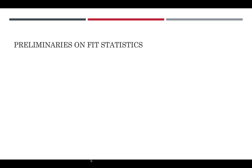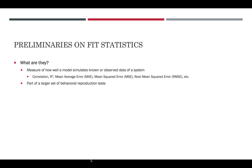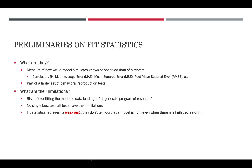In terms of preliminaries on fit statistics: what are they? There are lots of measures we might use — things like correlation, R-squared, mean average error, mean squared error, and so on. They're part of a larger set of behavior reproduction tests, not just in system dynamics but in lots of other statistical tools such as structural equation modeling and time series forecasting.